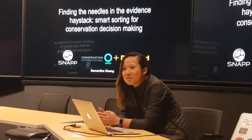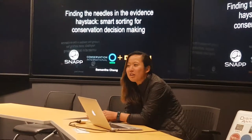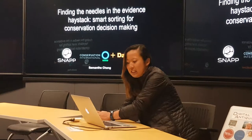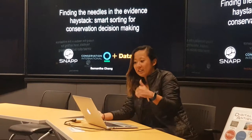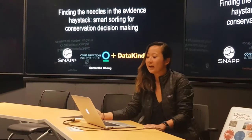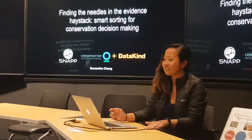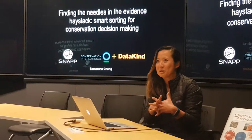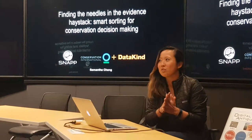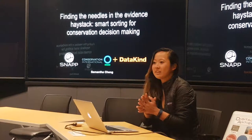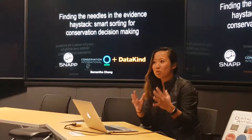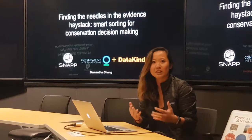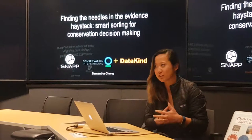I'm Sam Chang. I'm the Associate Director for Conservation Evidence at the Center for Biodiversity Outcomes here at ASU. Today I wanted to talk to you about how we find the type of information we need to make decisions for different types of conservation systems.